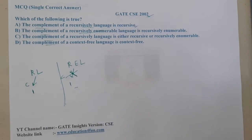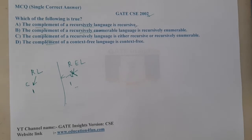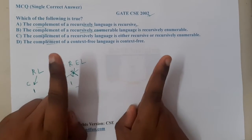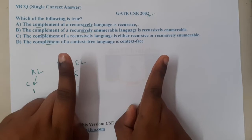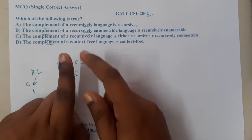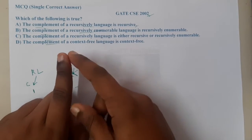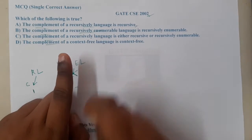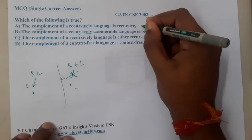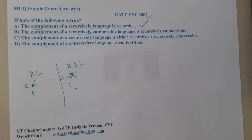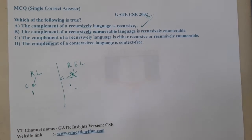Option A says that the complement of a recursive language is recursive. If I take one language which is recursive and apply complement to it, it will also be recursive. So that is absolutely true — 100% true.